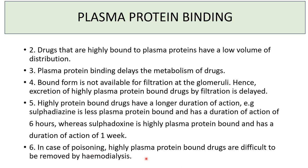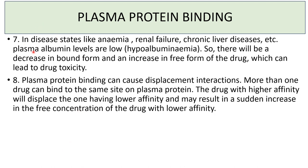In poisoning, highly plasma protein-bound drugs are difficult to remove by hemodialysis. In disease states like anemia, renal failure, and chronic liver disease, plasma albumin levels fall — hypoalbuminemia results in decreased bound drug, increased free drug, and potential toxicity. Plasma protein binding can also cause displacement interactions: two drugs competing for the same binding site means the drug with higher affinity displaces the one with lower affinity, causing a sudden increase in free concentration and potential toxicity of the displaced drug.